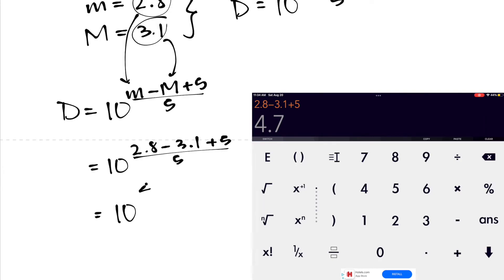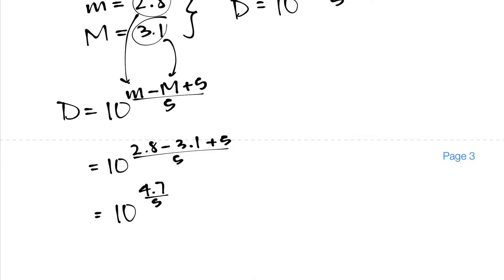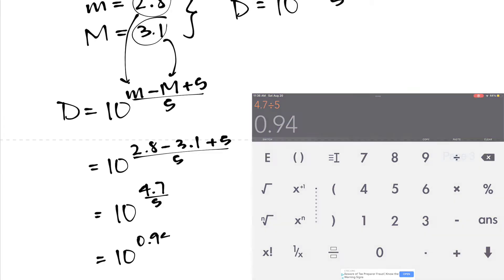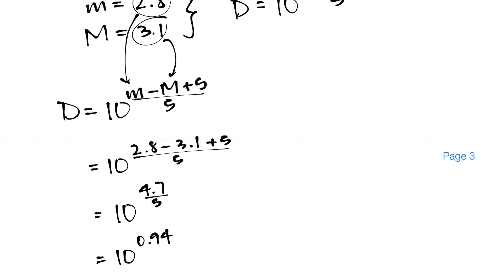And when we do the calculations for that, 2.8 minus 3.1 plus 5 is equal to 4.7. So we're going to do 10 to the power of 4.7, still divide that by 5, which means if we divide 4.7 by 5 we get 0.94. So now the exponent on the 10 is 0.94. And we want to make sure that we're calculating the exponent correctly because if the exponent is not accurate it's going to throw off the rest of our calculations.